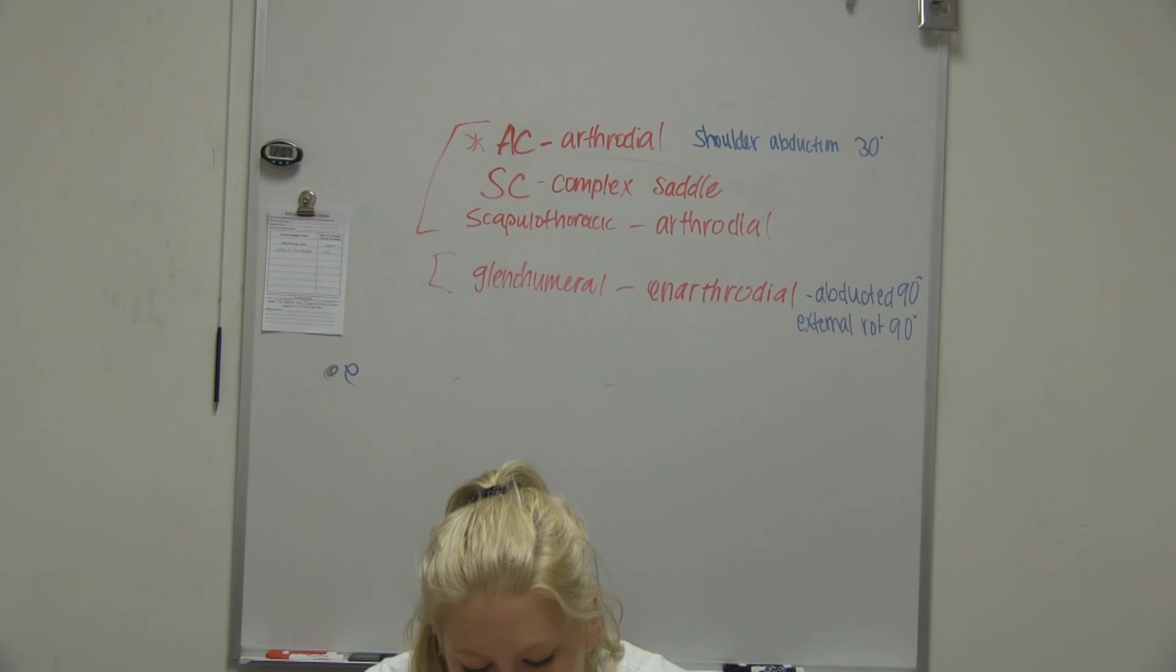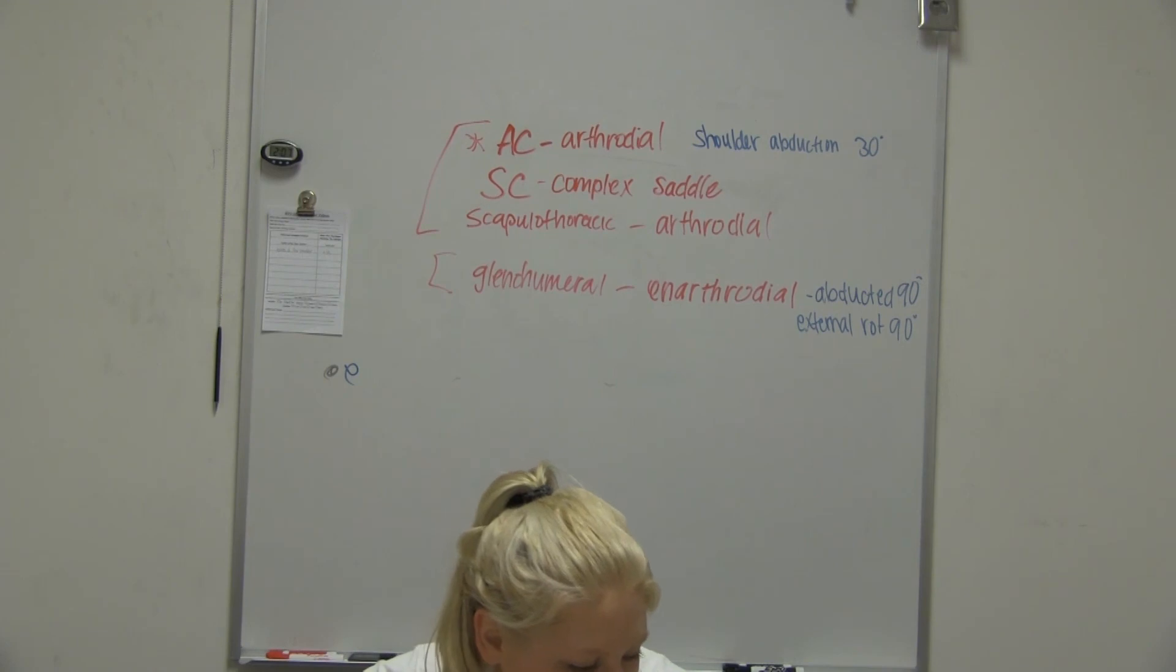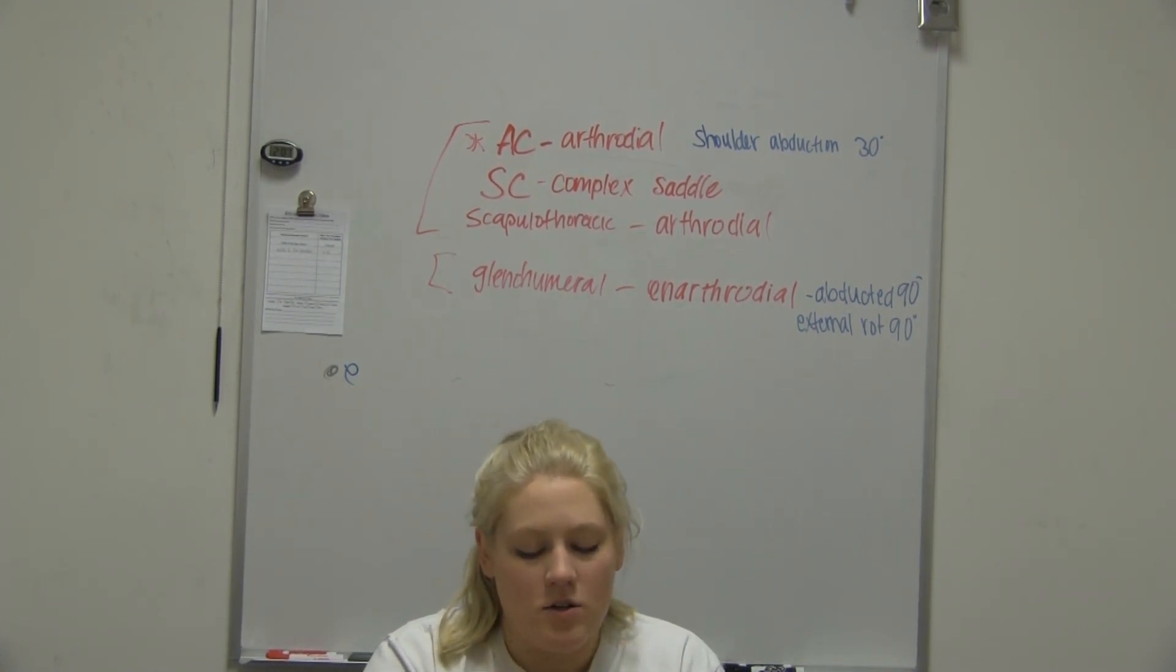Costoclavicular from the costal cartilage of the rib to the clavicle. Its main thing is clavicular elevation. Kind of anchors it down. But it also prevents medial, lateral, anterior, and posterior. So everything else. Basically. And that is our sternoclavicular. Okay.